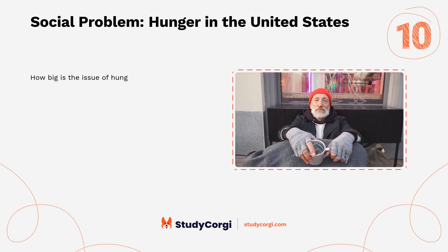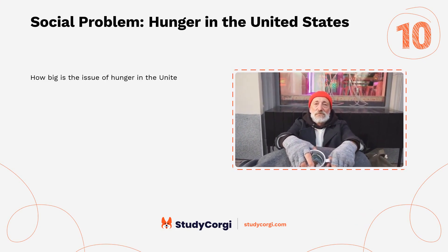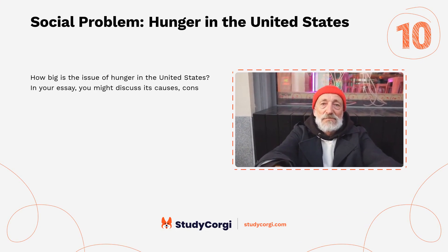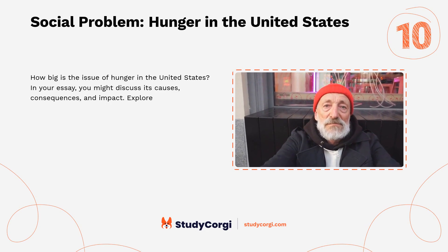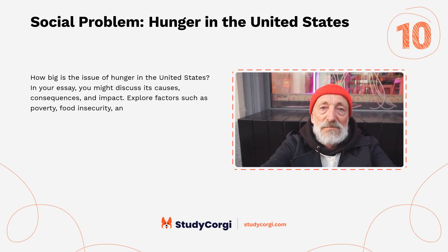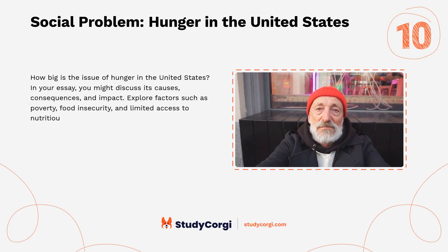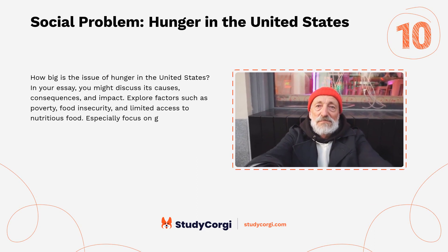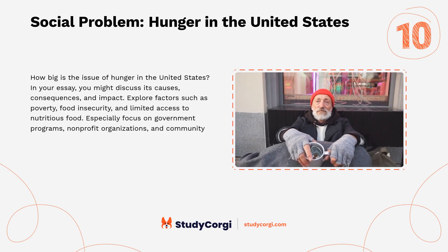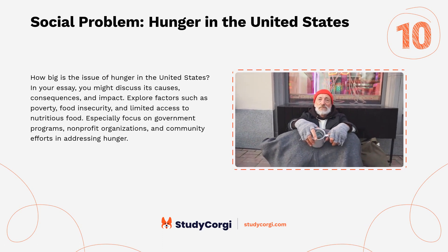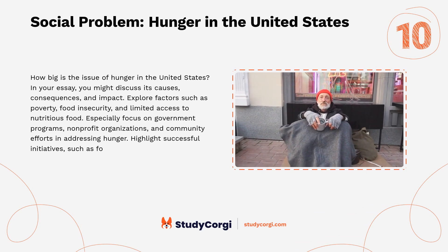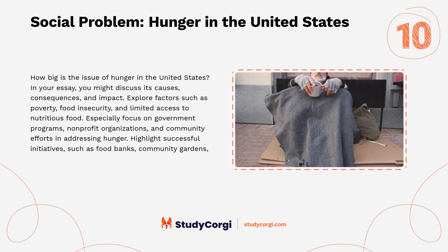Social problem: hunger in the United States. How big is the issue of hunger in the United States? In your essay, you might discuss its causes, consequences, and impact. Explore factors such as poverty, food insecurity, and limited access to nutritious food. Especially focus on government programs, non-profit organizations, and community efforts in addressing hunger. Highlight successful initiatives such as food banks, community gardens, and policy reforms.